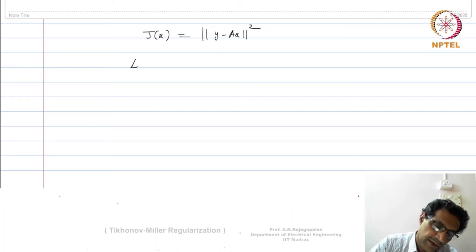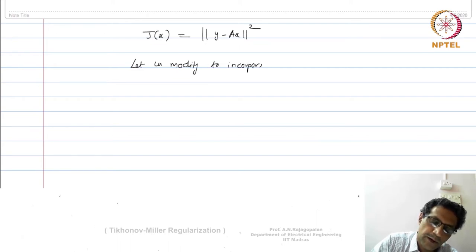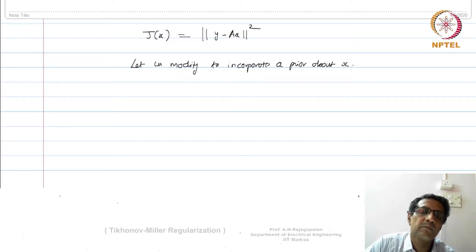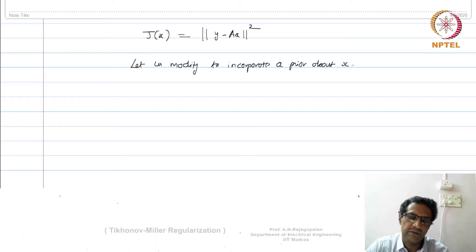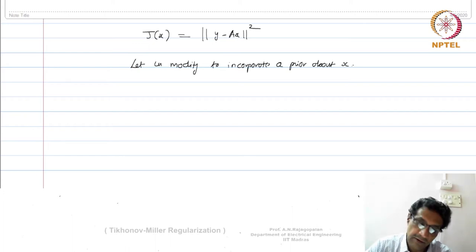Now let us modify it to incorporate a prior about x. Such a prior is normally very well known in the sense that these are generic priors. These are not really image specific — we are not trying to do it specifically for a certain class of image, texture, or face. This is a generic prior.